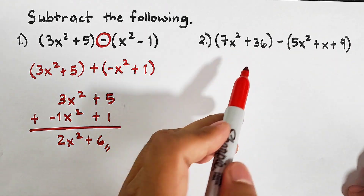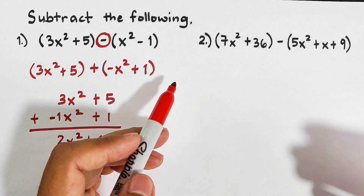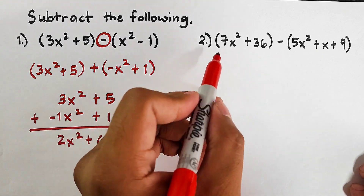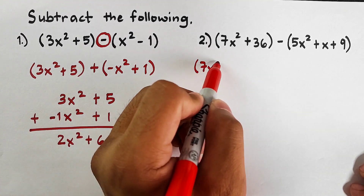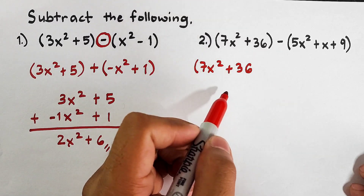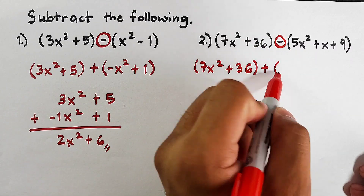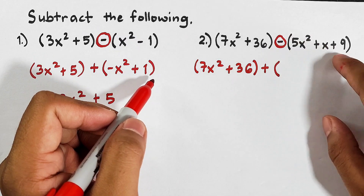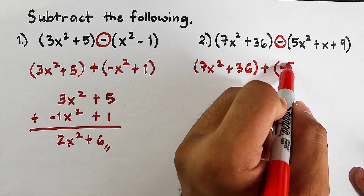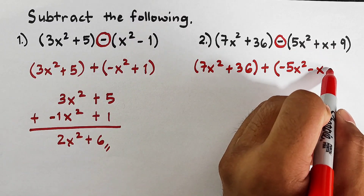For number 2, we have 7x squared plus 36, minus 5x squared plus x plus 9. Same thing — we copy the first polynomial: the quantity of 7x squared plus 36. Then we change the operation to addition, and we change the signs of all the terms of the second polynomial: positive 5x squared becomes negative 5x squared, positive x becomes negative x, positive 9 becomes negative 9.